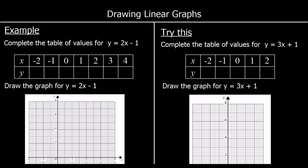In this video we are drawing straight line graphs. The first question says complete the table of values for y equals 2x minus 1. So the equation of our line is y equals 2x minus 1. We've been given a table to complete, and the x values in the table are going to be our x coordinates. We're going to substitute each of them into the equation of the line to find the y coordinates. I'm going to start with the positives because you're less likely to make a mistake substituting in positive numbers.